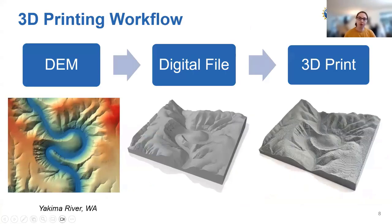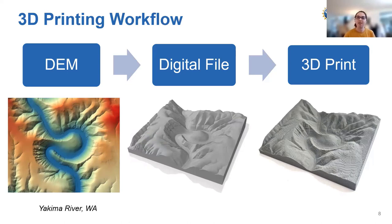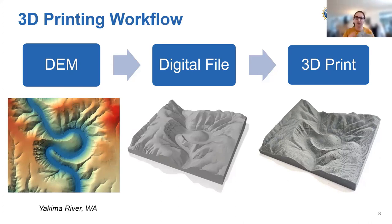It's a pretty simple workflow to go from topography to an actual physical 3D print. You start off with a digital elevation model — a 2.5D raster that can be created from a LiDAR point cloud. From that, you create a digital file, typically an STL file — a standard triangular language file — which is most commonly used in 3D printing. You then take that STL file and turn it into a cut file with all the specific layers that your 3D printer will print.